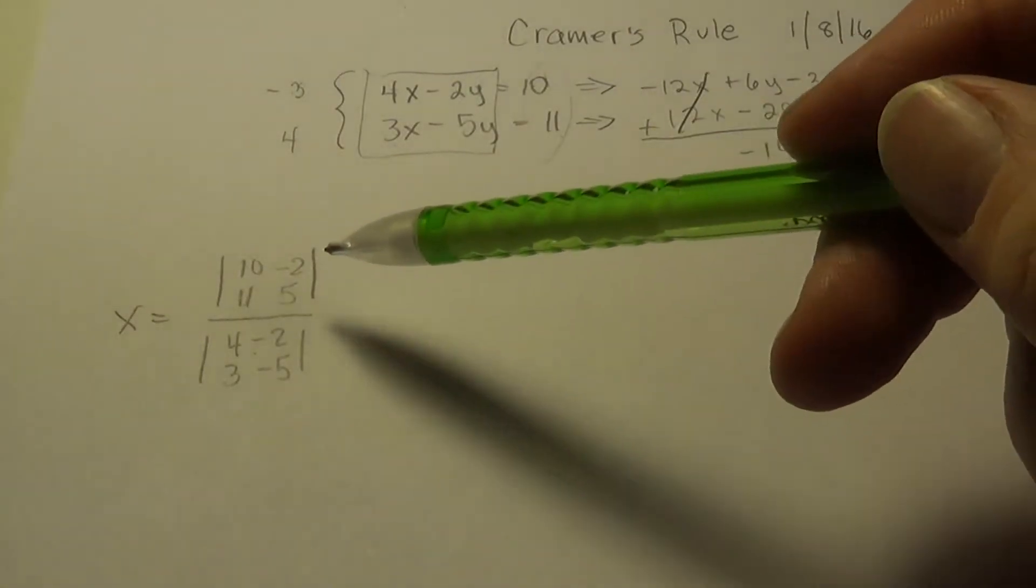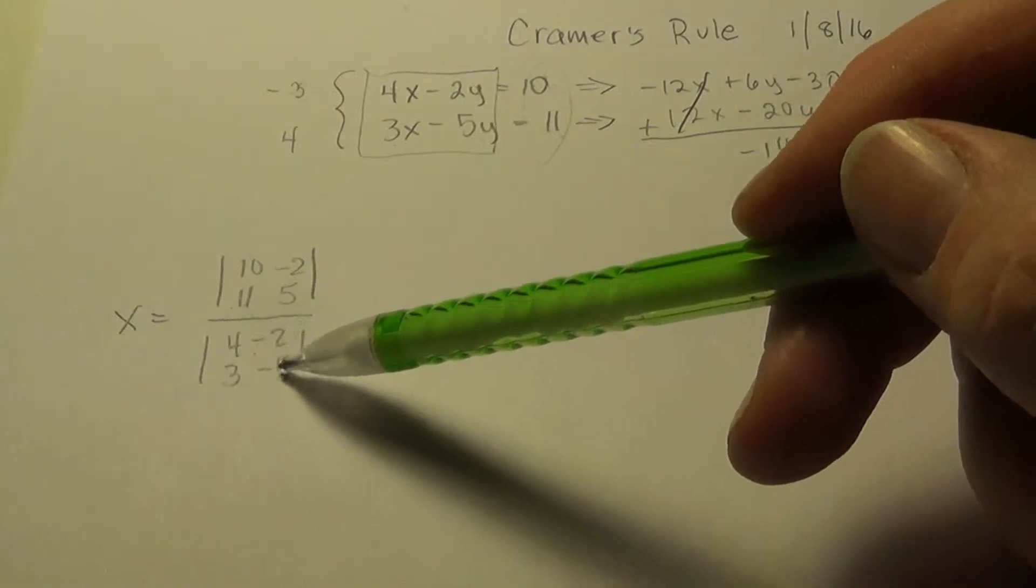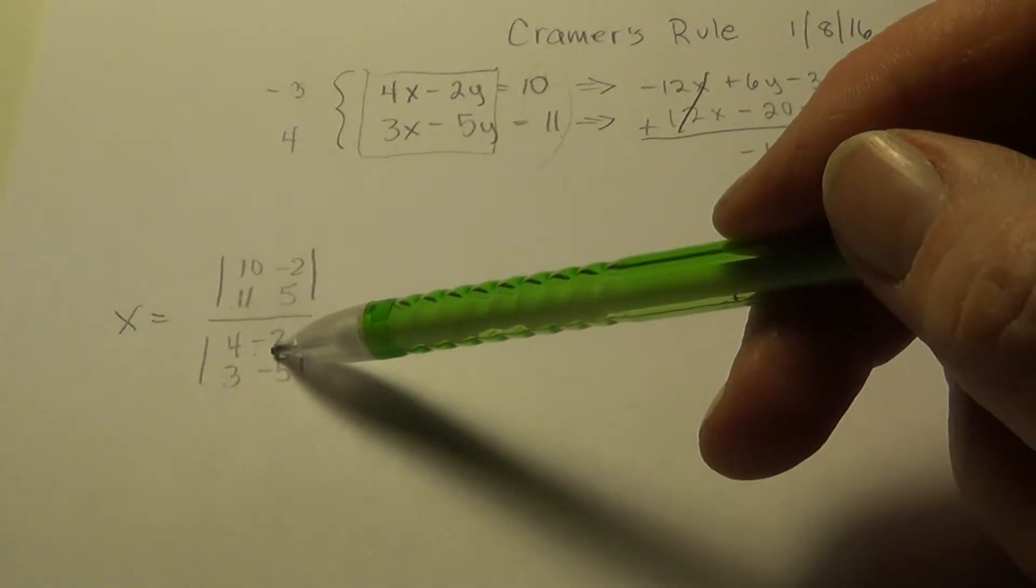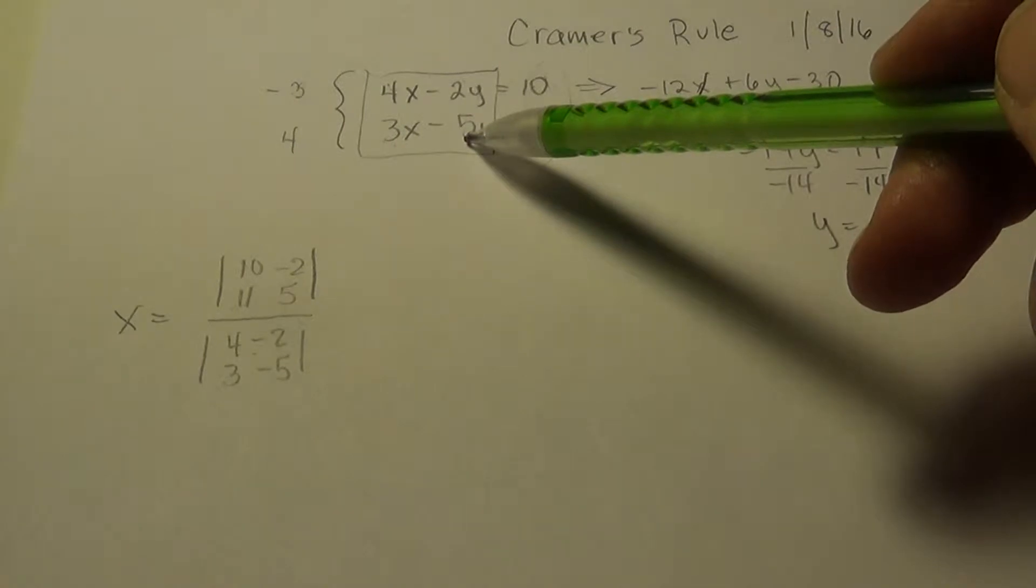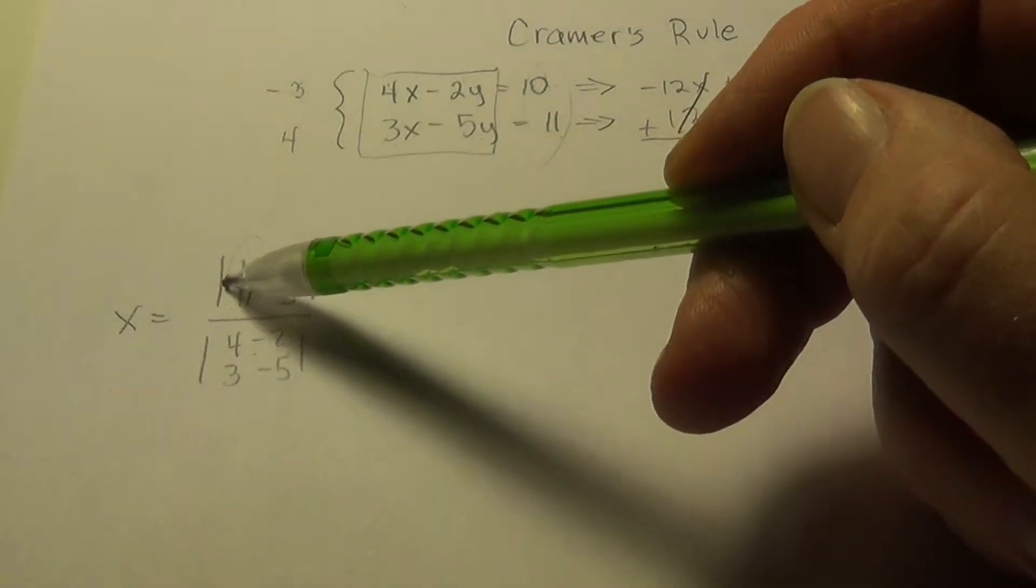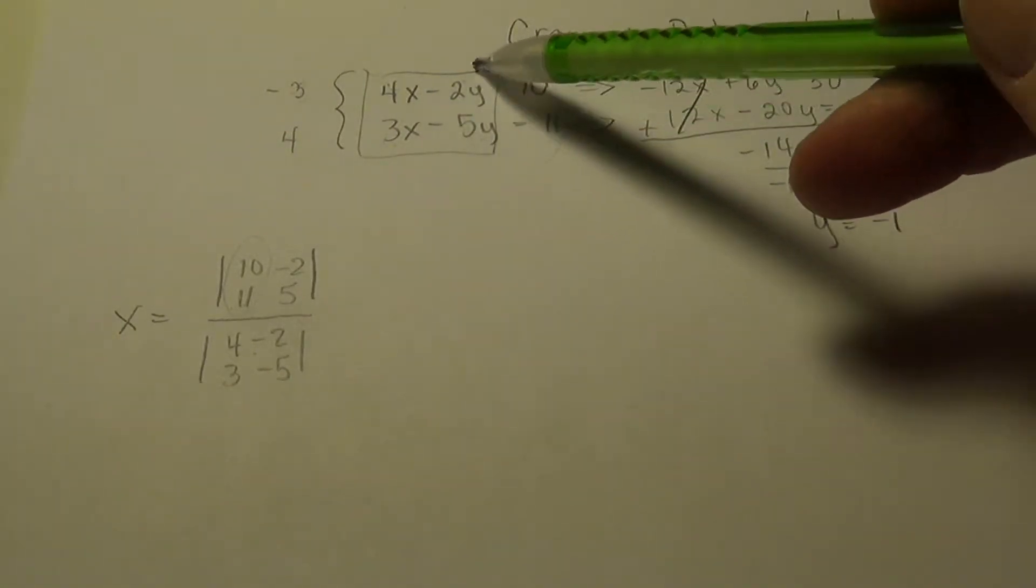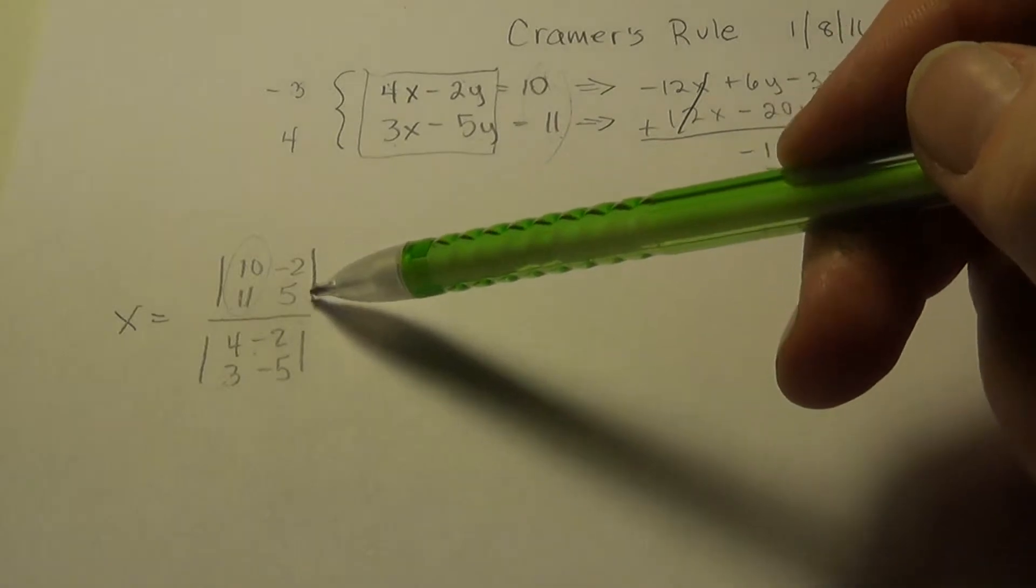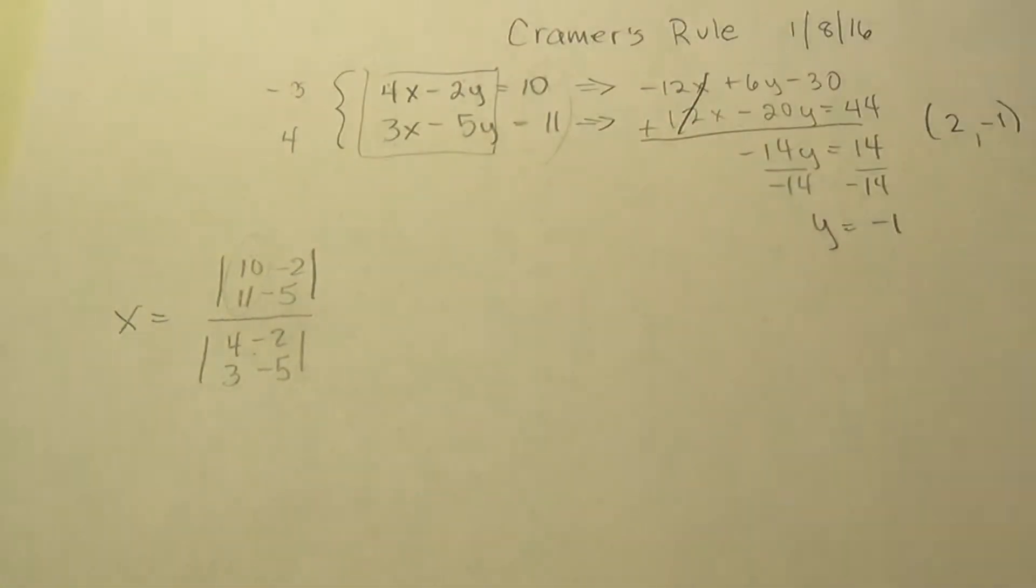So again, recap. The bottom of the fraction is a determinant using the coefficient matrix, 4, 3, negative 2, negative 5, unaltered. The top, when you're looking for x, the x spot is replaced by the constants. And the y spot remains unaltered. Oops. Did I put this in a negative 5?